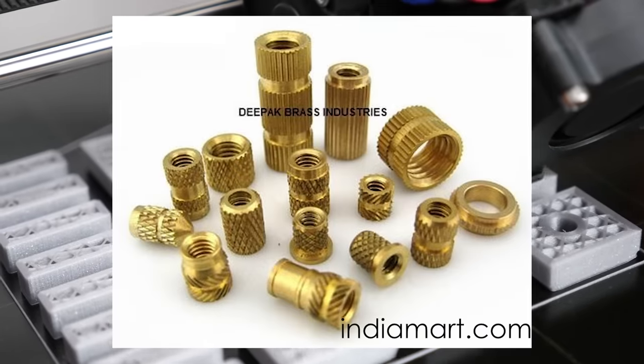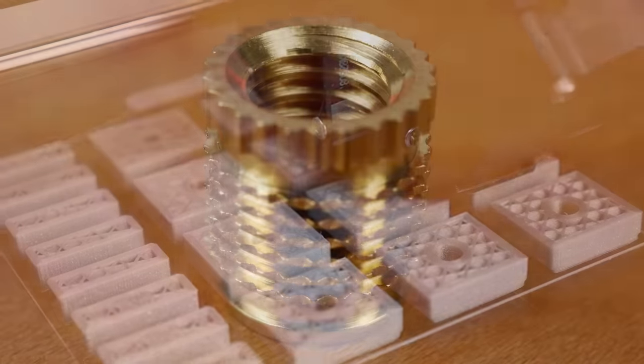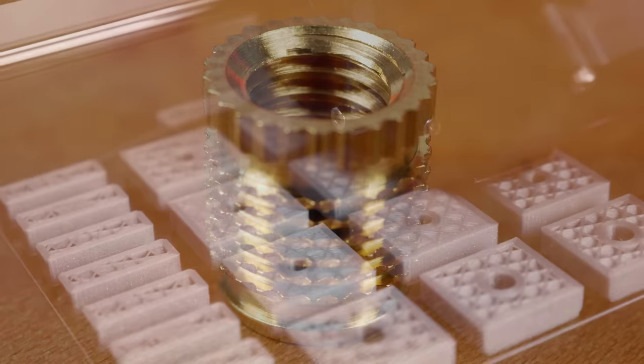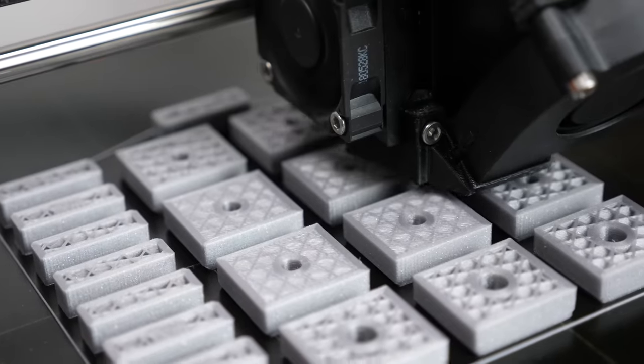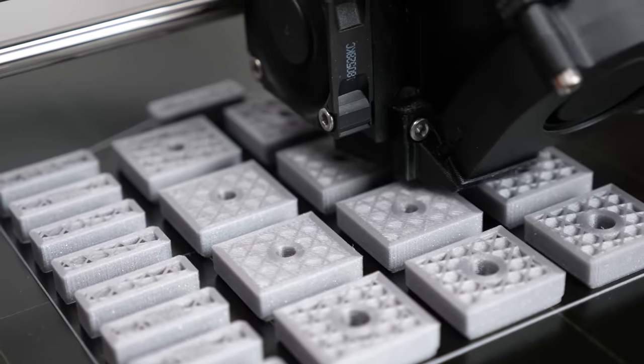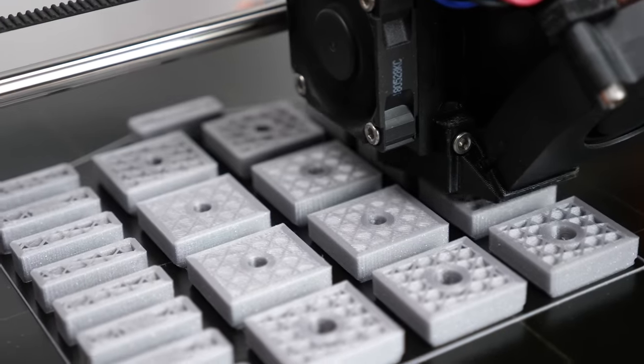These threaded inserts come in many different sizes and shapes but mainly consist of a body that is threaded on the internal diameter and has knurling patterns on the outside. The shape of the knurlings and grooves are not for aesthetical purposes but determine the resistance of the insert against being pulled out or failed due to the applied torque.